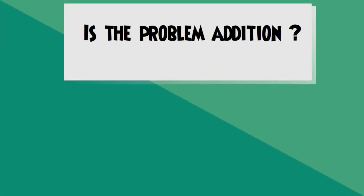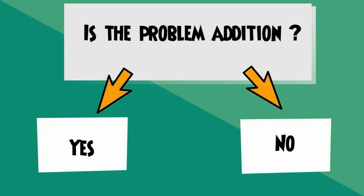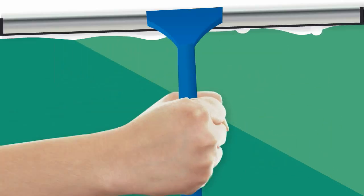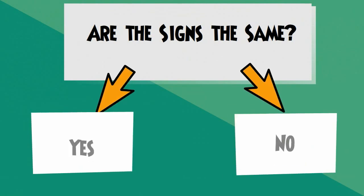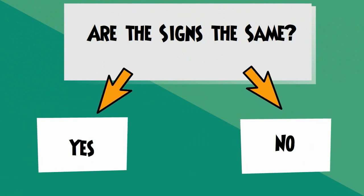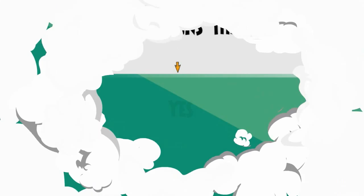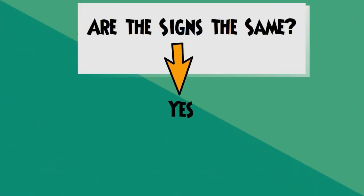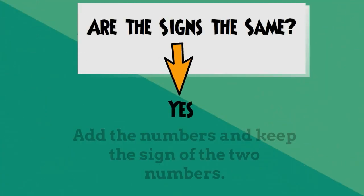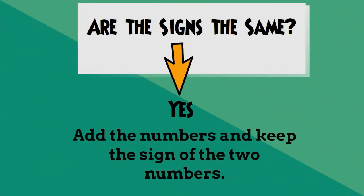The first question you ask is: is the problem addition, yes or no? If you answer yes, then you ask: are the signs the same, yes or no? If you answer yes — the signs are the same — add the numbers and keep the sign of the two numbers.